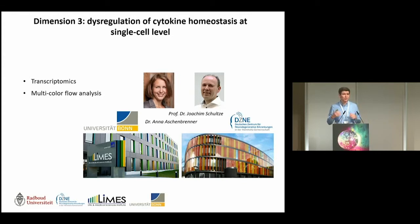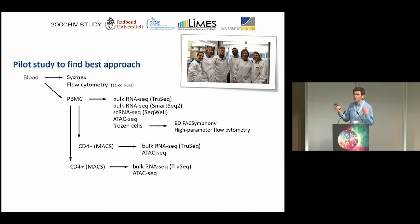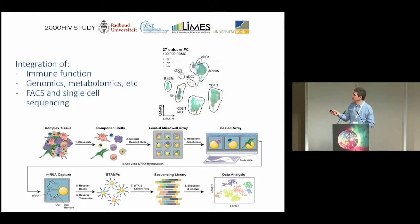A third level of trying to understand what is happening with HIV infections is a collaboration with colleagues at LIMAS at the University of Bonn, in which we try to combine the data sets we already have with assessment at the single-cell level. Blood from all these individuals will be assessed with advanced flow cytometry, but also with both bulk and single-cell sequencing, to understand whether within the cell populations that respond differently or have a disturbed network, there are cell subpopulations that are particularly important in the disturbances. We want to integrate immune functions with genomics, metabolomics, and single-cell sequencing.